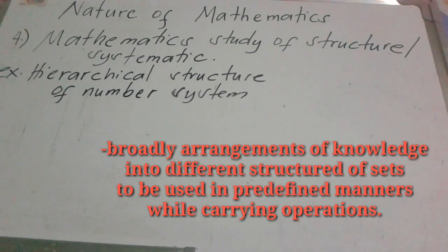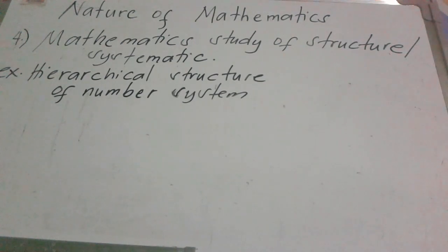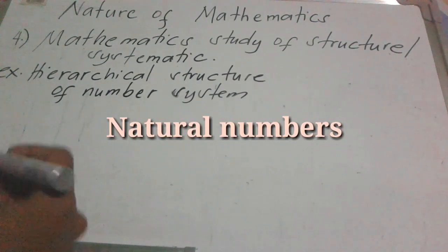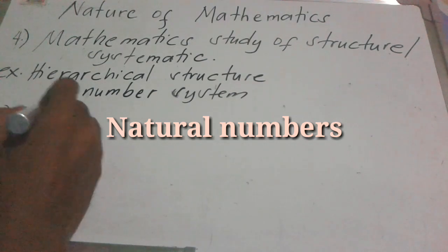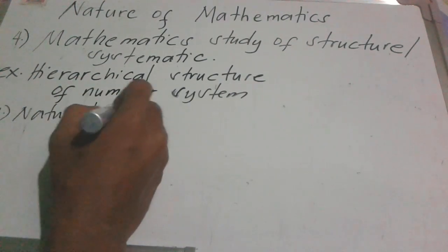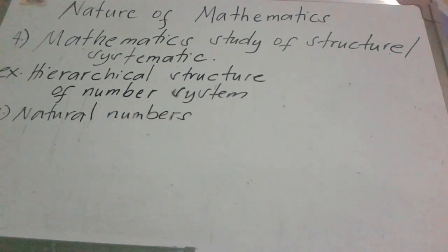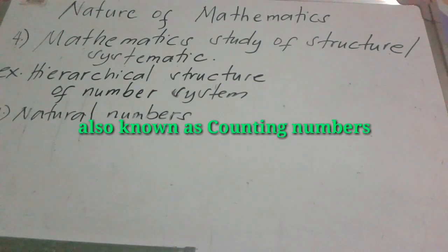An example of this is the hierarchical structure of the number system. Are you familiar with this hierarchical structure of the number system? The first number system or structure is the natural numbers. So what are natural numbers? Natural numbers are also called counting numbers.